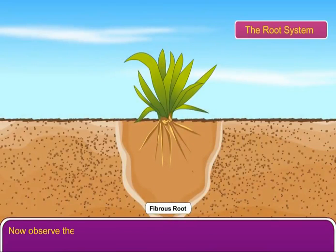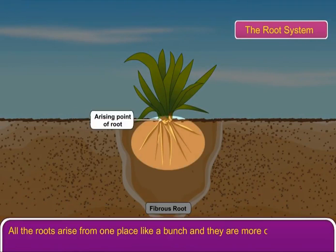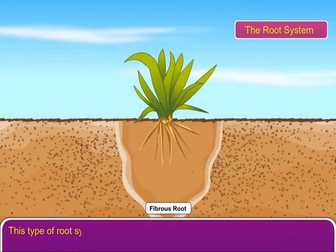Now observe the roots of an onion plant or a grass plant. All the roots arise from one place like a bunch and they are more or less similar in form and size. This type of root system is known as fibrous root system.